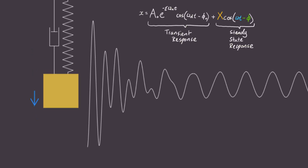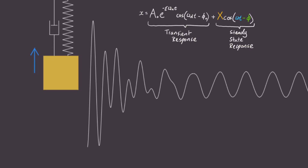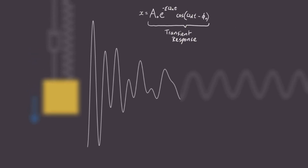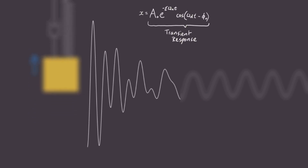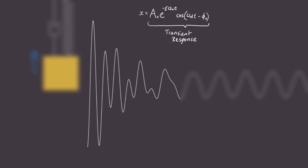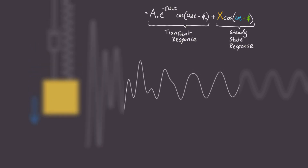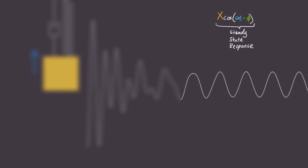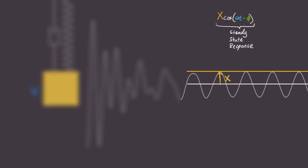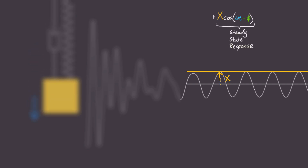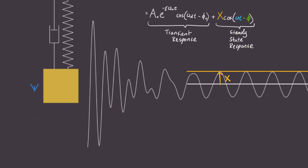In the beginning, the transient response hasn't been damped out yet, and so we see the messy influence of the initial conditions. However, these damp out exponentially fast. So, after some time, all we see is the steady state response, capital X cosine omega t minus phi. This means that our steady state amplitude, capital X, is really just the long-term amplitude of our vibrating system.